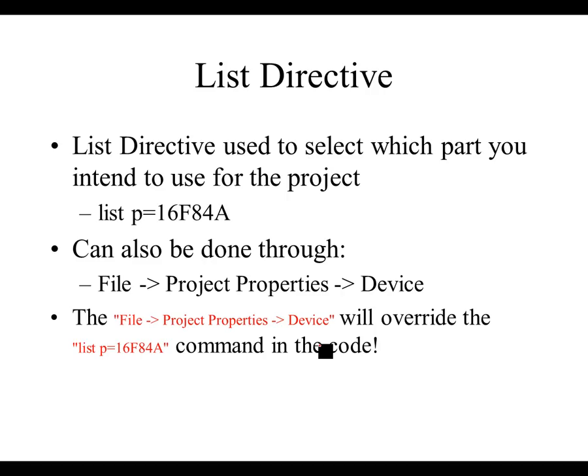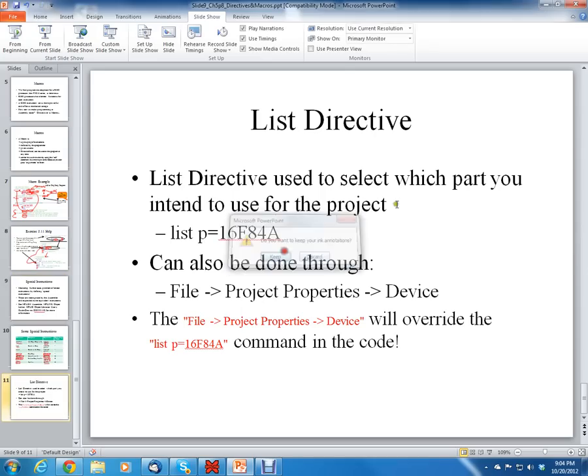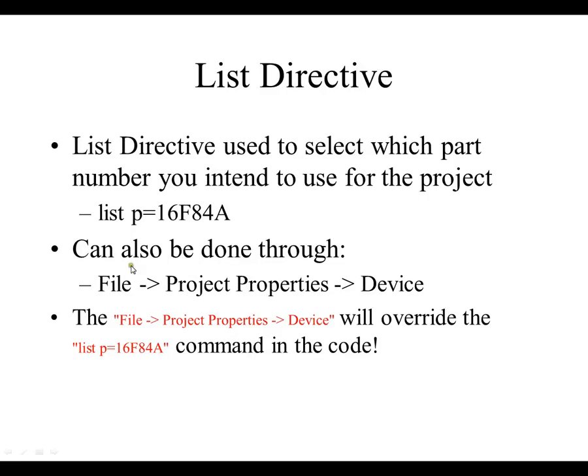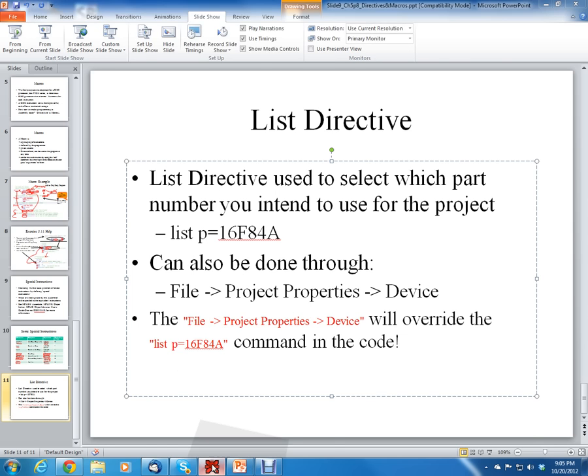Now finally, we'll talk a little bit about the list directive. So the list directive is used to select which part number you intend to use for the project. So there's lots of different part numbers. This can also be done through the file project properties and then device command. The file project properties device command will always override the list command.